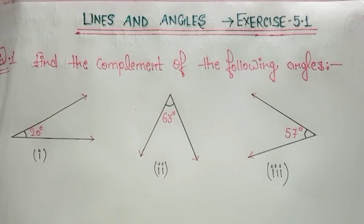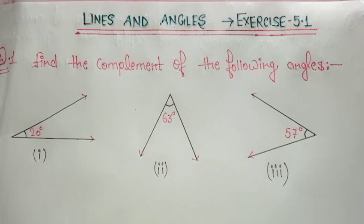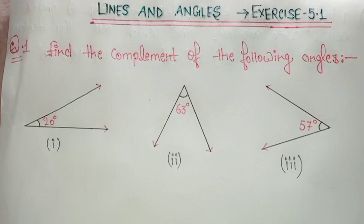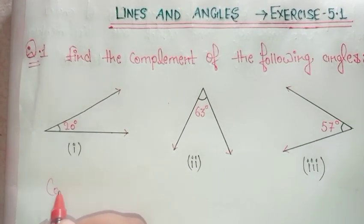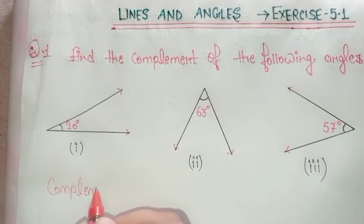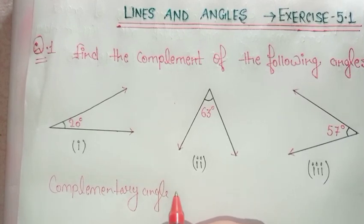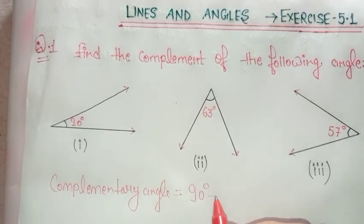Question 1 is: find the complement of the following angles. I told you in my last video about complementary angle and supplementary angle. What is complementary angle? The two angles whose sum is equal to 90 degrees are known as complementary angles. So here you have to find the complement of 20 degrees. The formula is: complementary angle equals 90 degrees minus the given angle.